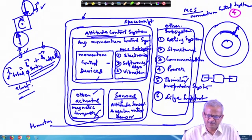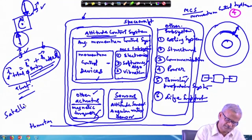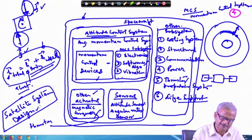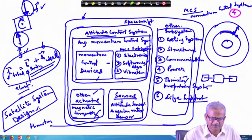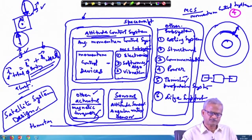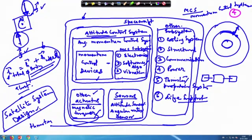There are many books available on satellite system design that give a fairly good idea about the design requirements and problems you face while designing a spacecraft. They won't discuss the attitude control system in detail, but they will give you a brief idea about what the attitude control system is. We stop here and will continue in the next lecture. Thank you very much.